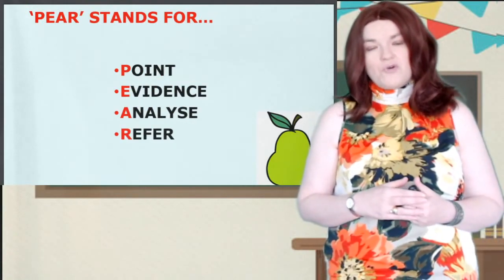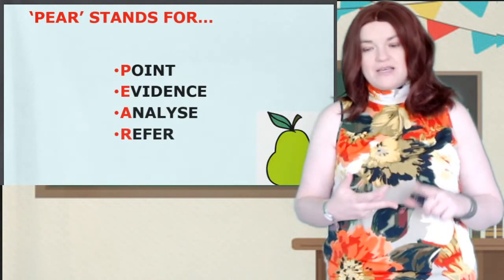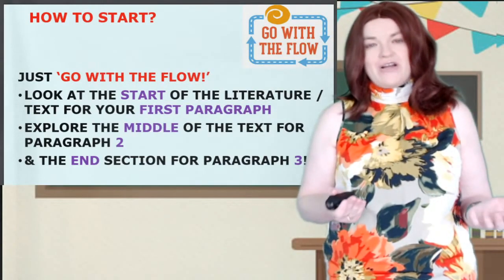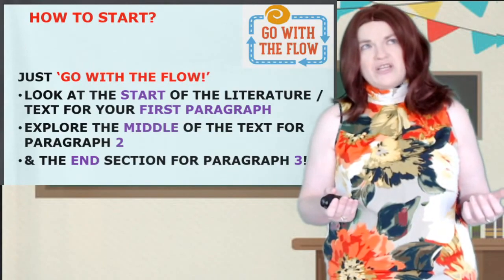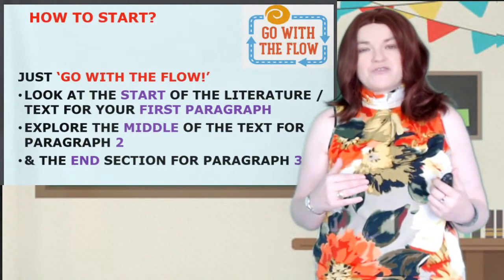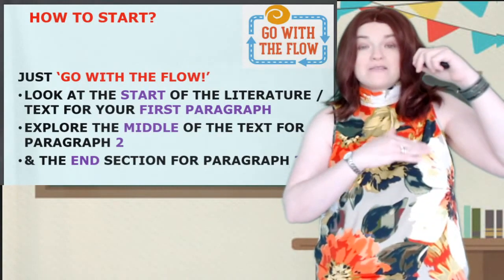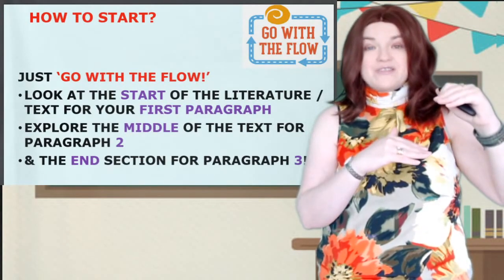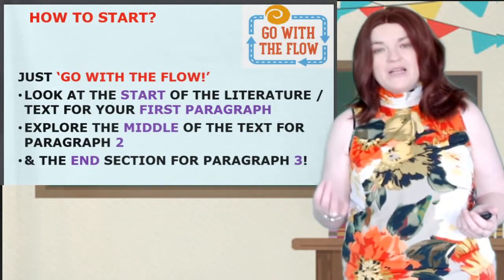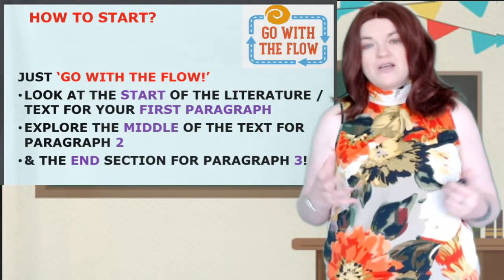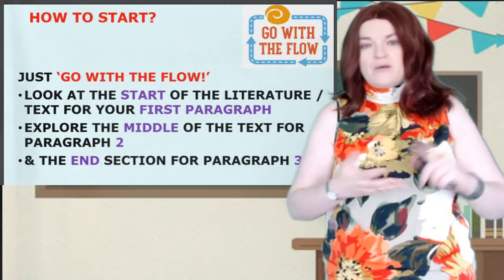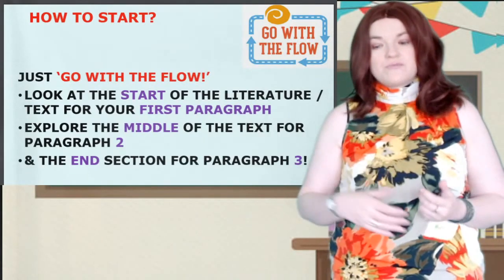PEAR stands for Point, Evidence, Analyse and Refer. So how do you start a critical essay? I always say go with the flow. If you follow this structure you'll have a big paragraph that talks about the beginning of the text, then another one that looks at the middle, and another one at the end. That's how to plan it — beginning, middle, end — whether it's a play, a massive novel or a short poem. The same applies.